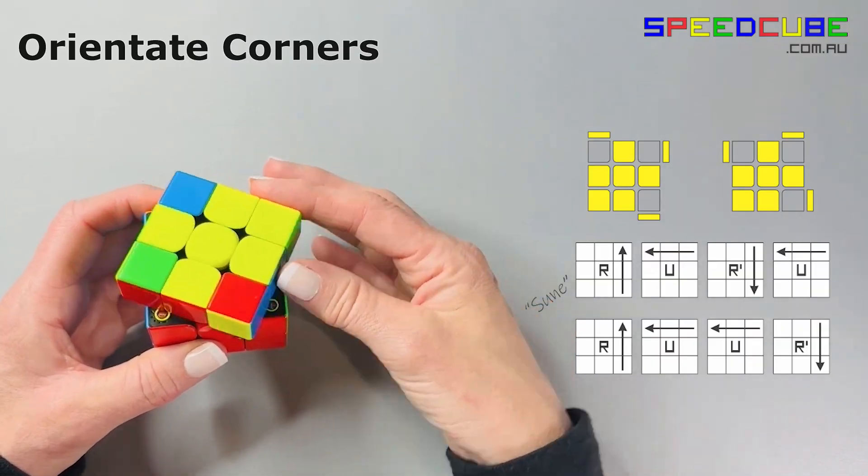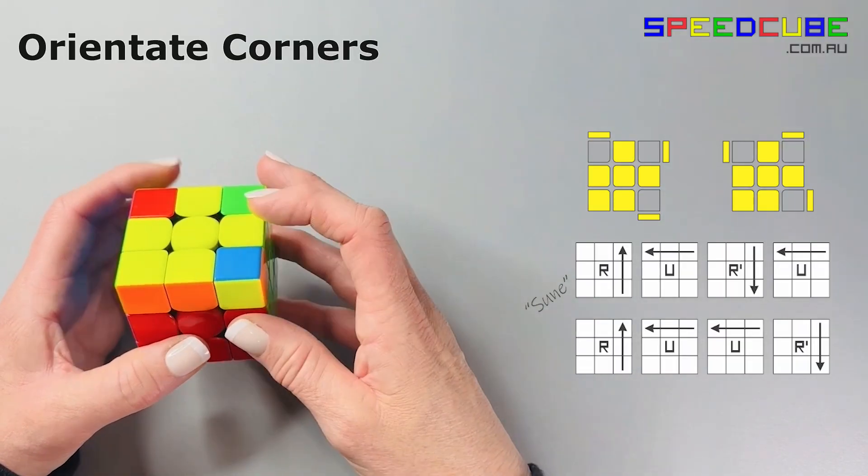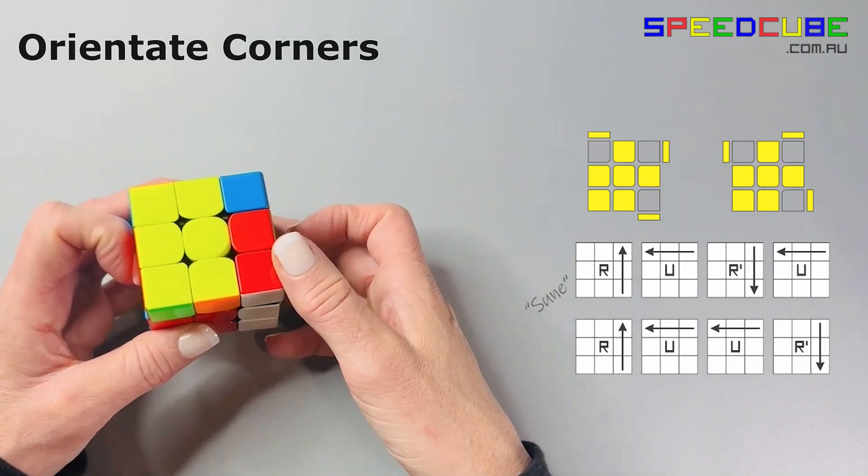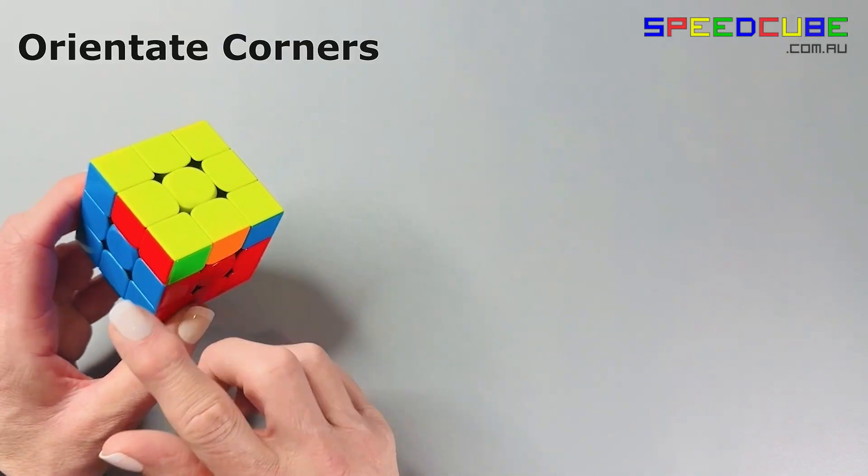We're going to do it again. We've still got one corner facing up. Turn that corner in the front left-hand side. Repeat the algorithm. Now it's all yellow. The side colors don't match, but that doesn't matter.